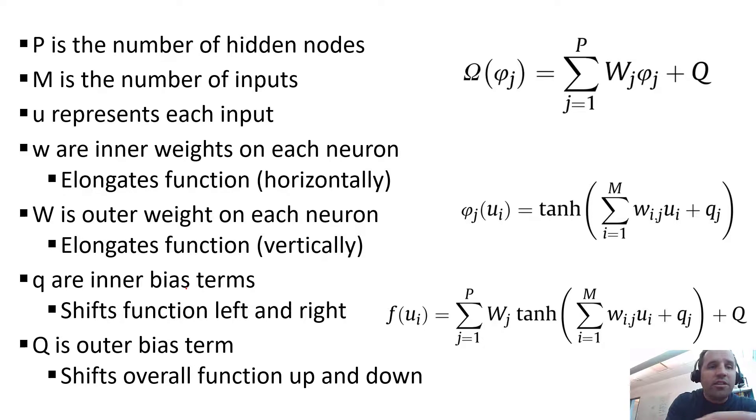So we can adjust a lot of different things. We have P, this is the number of hidden nodes that we might have. And so that just gives us, if we add more hidden nodes in each layer, that just gives us more and more weights to work with and more activation functions to work with. M is the number of inputs. U represents each input. We have the little w's that show up here in our activation function. So those are the inner weights on each neuron. And if you remember, this hyperbolic tangent had that kind of S shape. So what these inner weights do is they elongate the function going horizontally. What the outer weight does, that outer weight shows up here on the layer following our hidden layer. So those elongate each function vertically and then we are able to add biases with the little q's and the big q's.